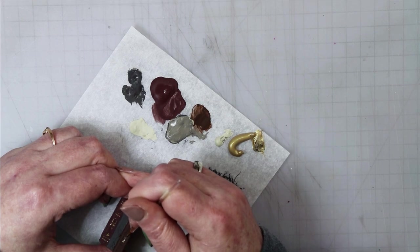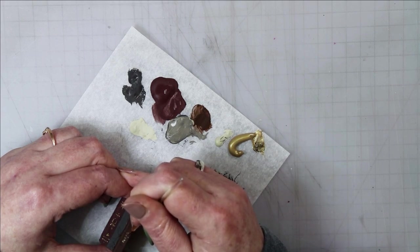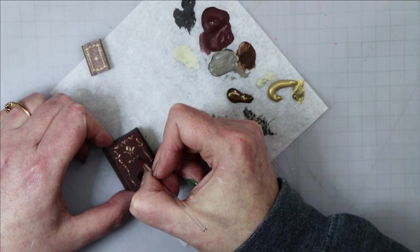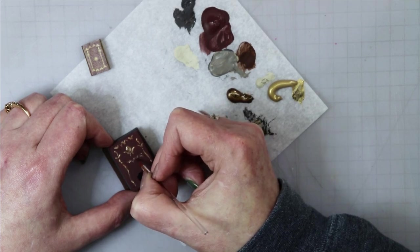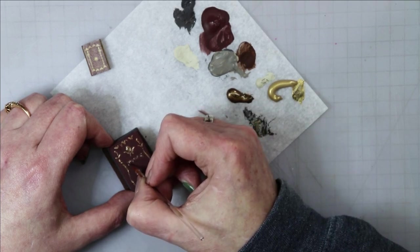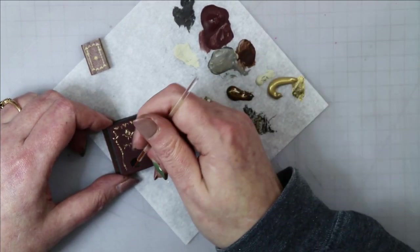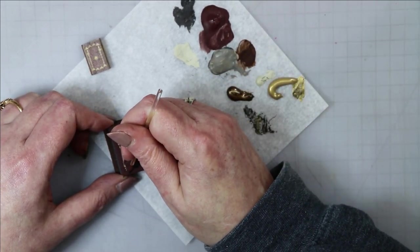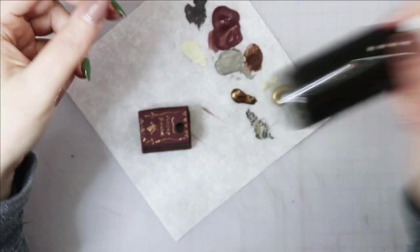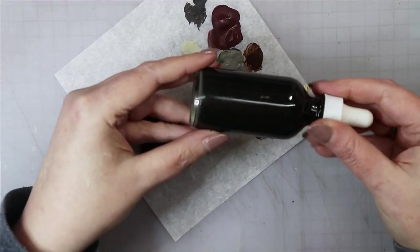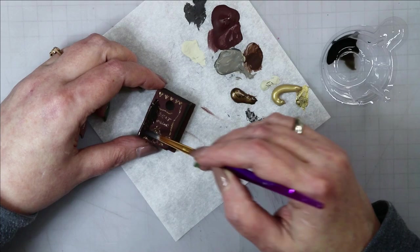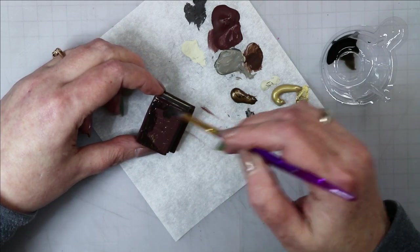And then finally to finish off the detailing on the books I took some metallic paint - one was a gold metallic and the other one was an espresso metallic - and painted on some details to make them look like old expensive leather-bound books.